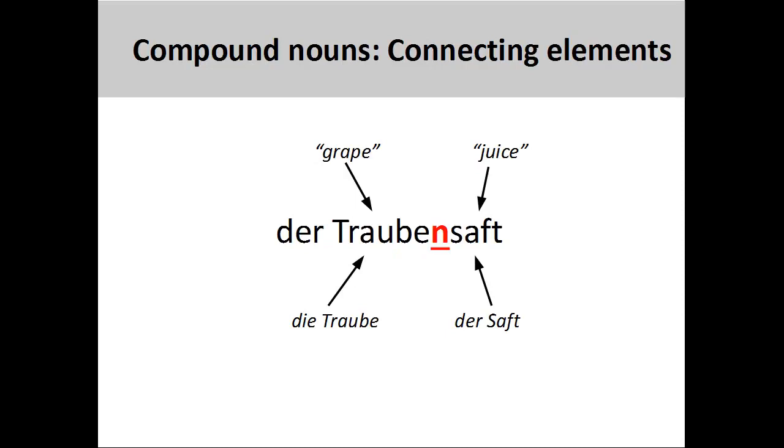Here the noun die Traube, grape, is joined to the noun der Saft, juice, by the plural ending -n, to create the compound noun der Traubensaft, grape juice.